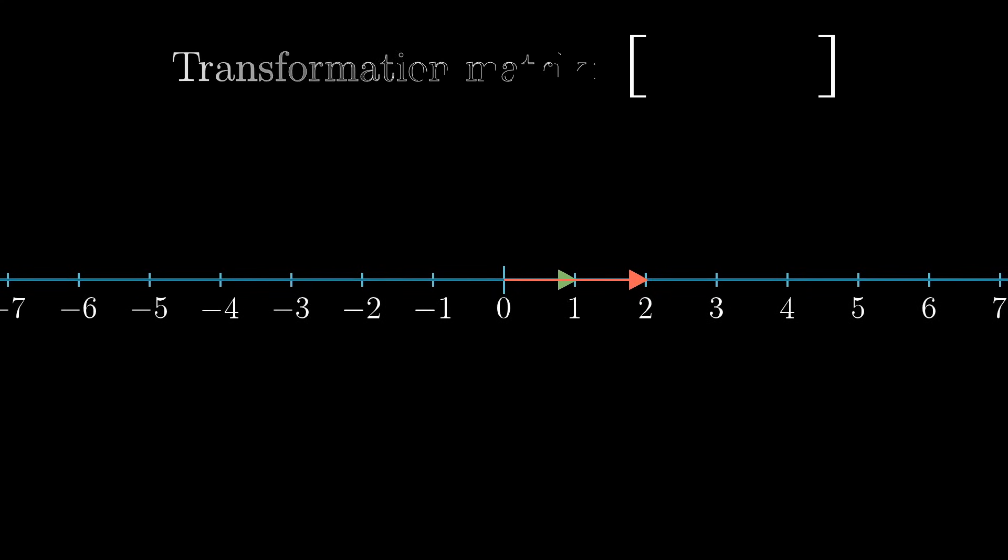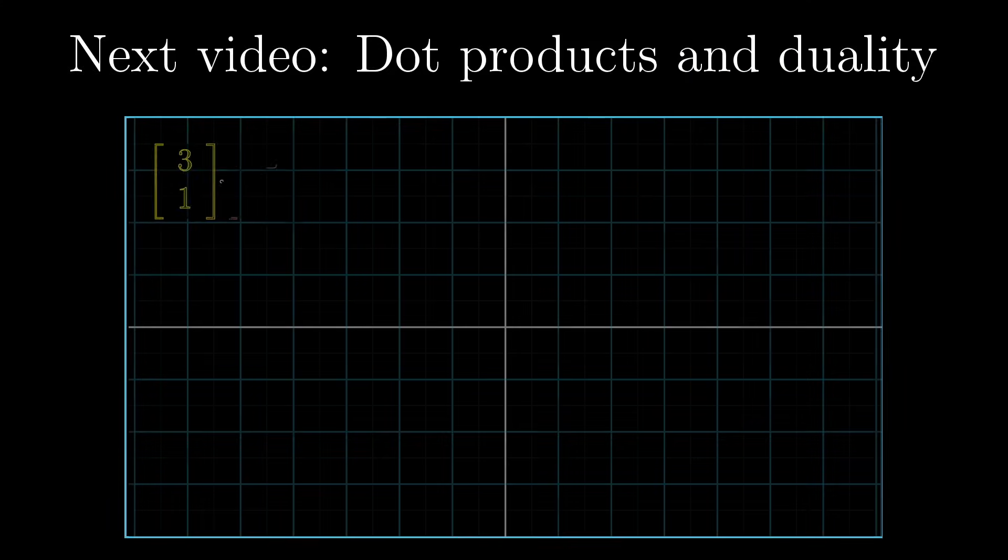One of these transformations is encoded with a 1x2 matrix, each of whose two columns has just a single entry. The two columns represent where the basis vectors land, and each one of those columns requires just one number, the number that that basis vector landed on. This is actually a surprisingly meaningful type of transformation with close ties to the dot product, and I'll be talking about that next video.